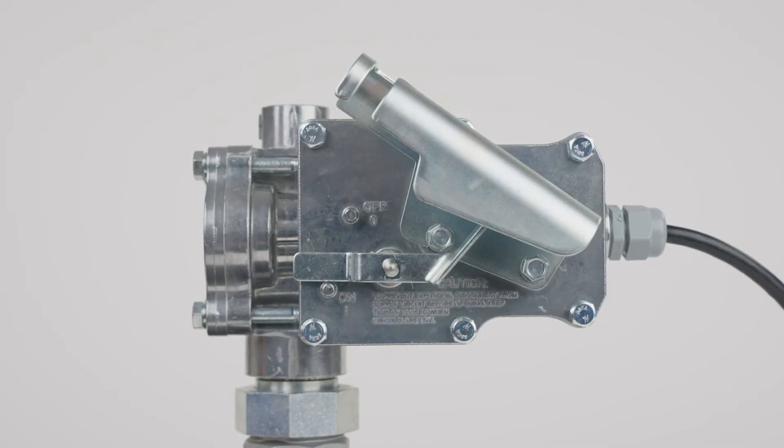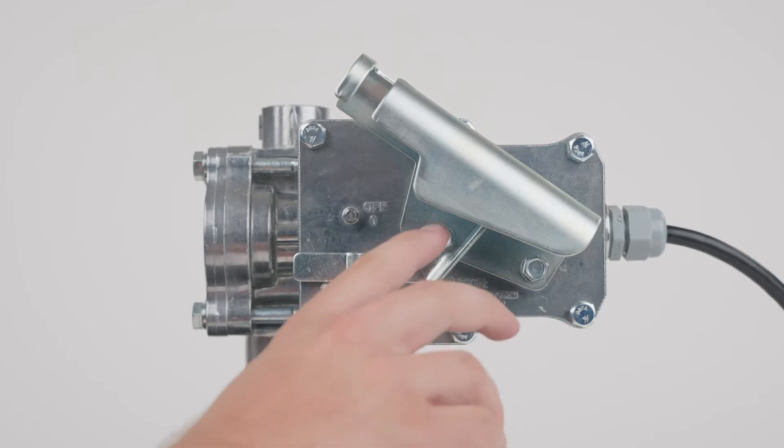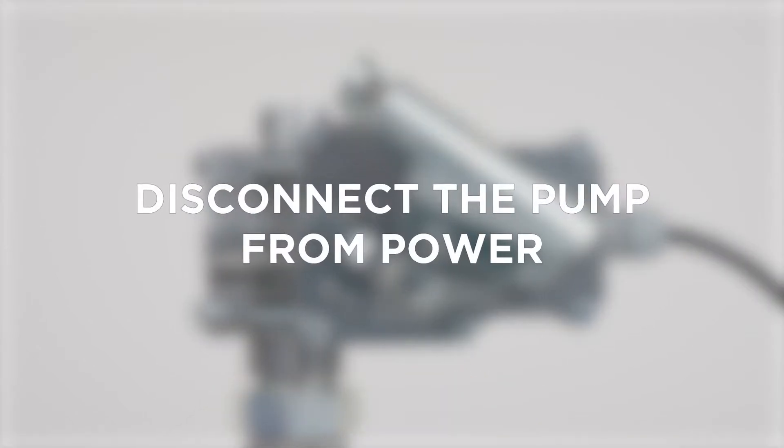To clean or replace the bypass poppet on your EZ-8, turn the pump off and disconnect the pump from power.